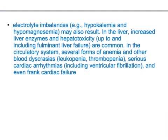Electrolyte imbalances are very important — particularly hypokalemia. They may give a long clinical history where the patient is on Amphotericin B and show low potassium on lab findings, asking for the cause. Also remember hypomagnesemia and hepatotoxicity with increased liver enzymes. In the circulatory system: normochromic anemia, leukopenia, thrombocytopenia, serious cardiac arrhythmias, ventricular fibrillation, and even frank cardiac arrest.